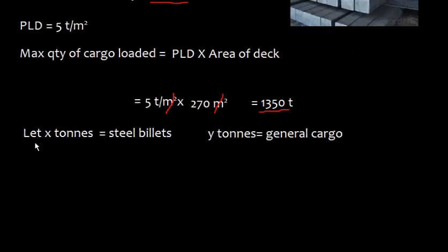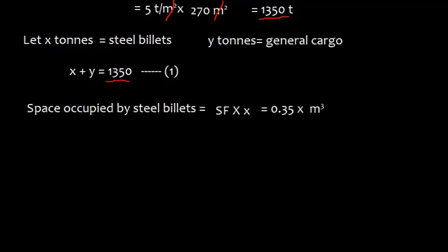Let x tons be the steel billets and y tons be the general cargo. So x + y = 1,350 tons — this is equation one. The space occupied by steel billets equals storage factor × quantity: 0.35 × x cubic meters, since storage factor (m³/ton) × mass (ton) = volume (m³).